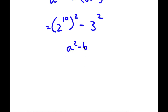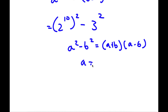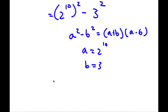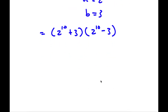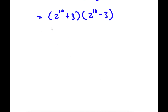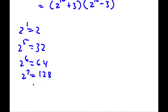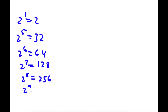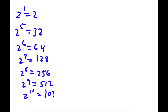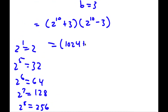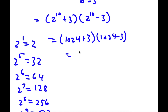Now if I have something in the form a squared minus b squared, this is equal to a plus b times a minus b. So in this case a is equal to 2 to the power of 10 and b is equal to 3. So now I have 2 to the power of 10 plus 3, times 2 to the power of 10 minus 3. Now 2 to the power of 10 — 2 to the power of 5 is 32, 2 to the power of 6 is 64, 2 to the power of 7 is 128, 2 to the power of 8 is 256, 2 to the power of 9 is 512, and 2 to the power of 10 is 1,024. So now I have 1,024 plus 3, times 1,024 minus 3 — that's 1,027 times 1,021.